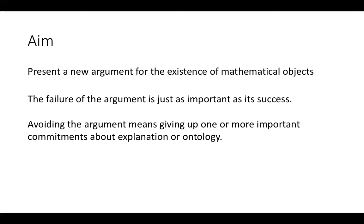Although I'm going to be presenting and defending the argument, I think it's really interesting because if the argument fails it actually shows us something interesting either about explanation or about ontology — about the way we think about objects and the relations between them. I'm interested in the failure of the argument just as much as its success. I'll be showing you some ways out of the argument and identifying the costs of those ways out. I am a mathematical realist, so I also take this to be an argument in favour of mathematical realism, and it's distinct from existing arguments for realism.